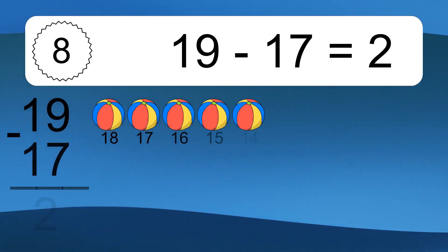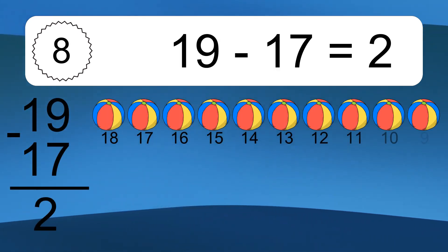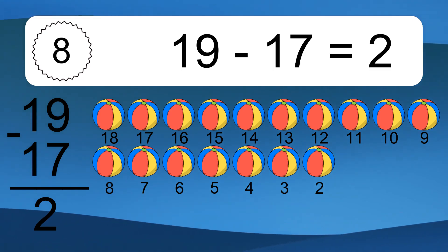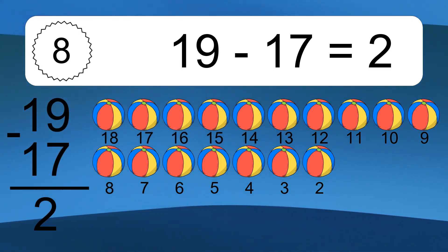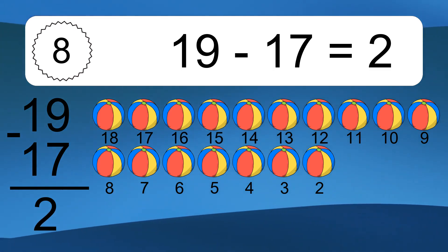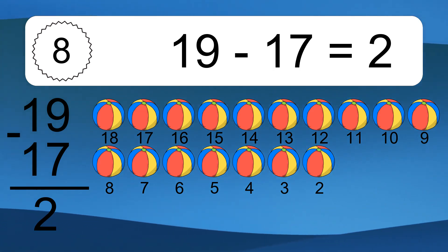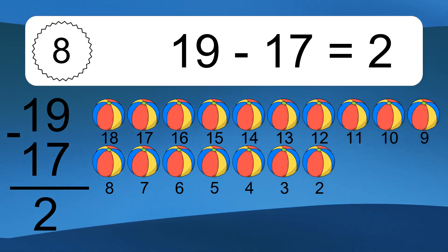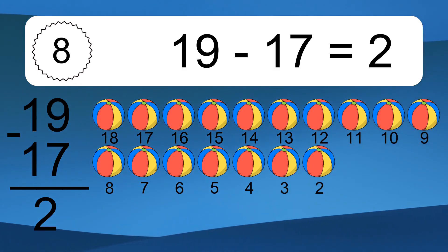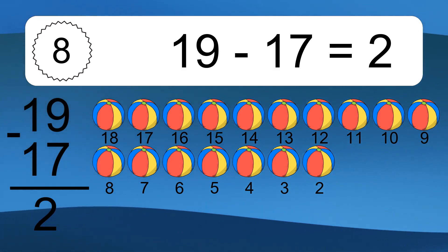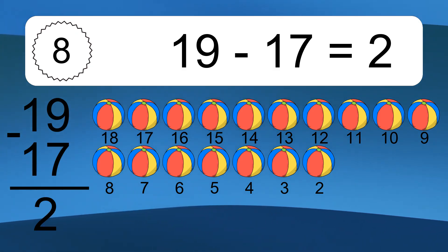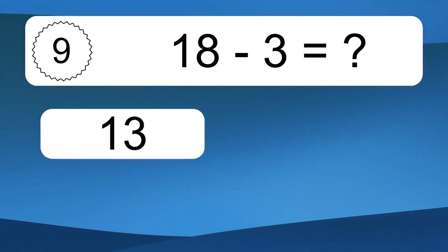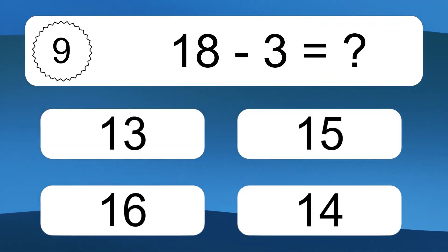19 minus 17 equals what? 19 minus 17 equals 2. Let's count it. 18, 17, 16, 15, 14, 13, 12, 11, 10, 9, 8, 7, 6, 5, 4, 3, 2.